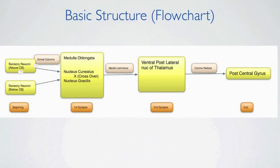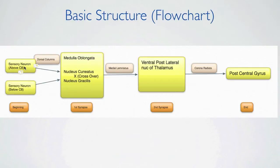Let's go over this basic structure in a flowchart manner. At the beginning you have a sensory neuron, either above C8, like in the arms, or below C8, like in the legs. These fibers go up through the dorsal column and their first synapse is in the medulla oblongata — at the nucleus cuneatus for the sensory neurons above C8, or at the nucleus gracilis for the sensory neurons below C8.